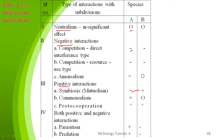Neutralism means no significant effect — species A and species B are not affected with each other. Negative interaction is of three types: first is competition by direct interference, where both are inhibited; second is competition by resource use, where again both are inhibited; and third is amensalism, where one species is inhibited and the other is non-affected.